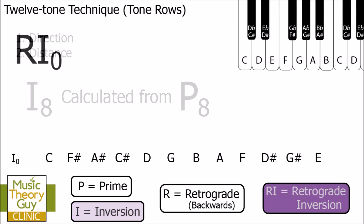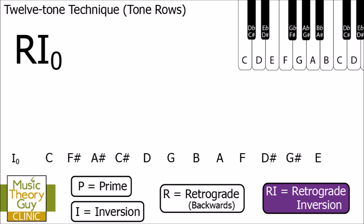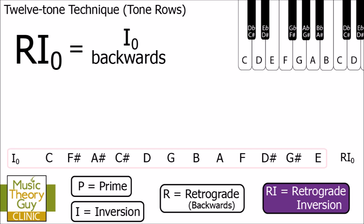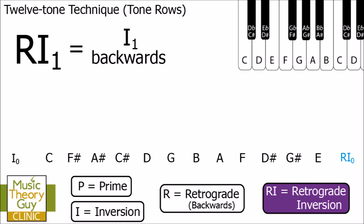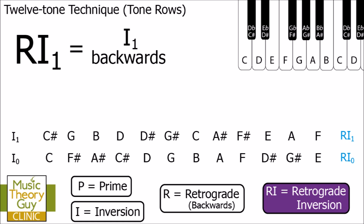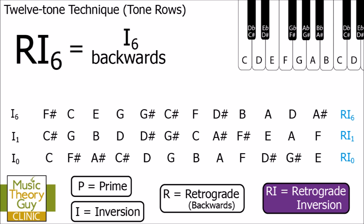Let's now look at retrograde inversion, or RI rows. As you may know from part one, retrograde is just a fancy word for backwards. So RI0 simply means I0 backwards. At the bottom of the screen in red is I0, and in blue RI0 is I0 backwards — so the first note of RI0 is E, then G sharp and D sharp, which are actually the last three notes of I0. Similarly, RI1 is I1 backwards, RI6 is I6 backwards, and so on.